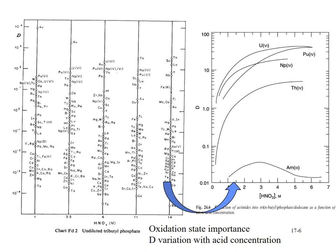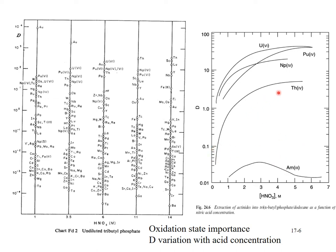Comparing distribution coefficient values as a function of nitric acid concentration for different metal ions: trivalent species do not extract well — all very low values. Tetravalent species such as neptunium(IV), thorium(IV), and plutonium(IV) extract well, as does uranium(VI). In the range of 3–6 molar nitric acid, the +4 and +6 species are reaching almost a plateau for extraction.